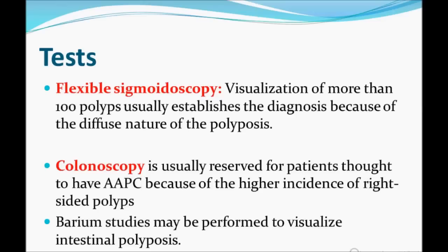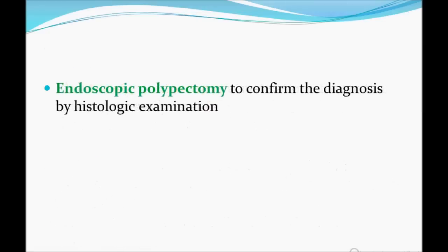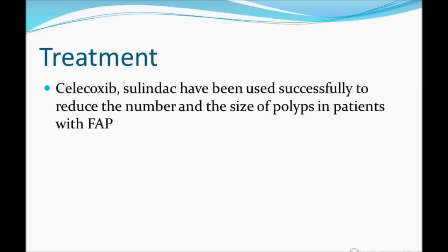The important diagnostic test is flexible sigmoidoscopy, because most polyps are on the sigmoid — the left side. However, colonoscopy is preferred since polyps can also be present on the right side with higher incidence. Barium studies may be performed to visualize intestinal polyposis. Endoscopic polypectomy and biopsy are used to confirm the diagnosis histologically.